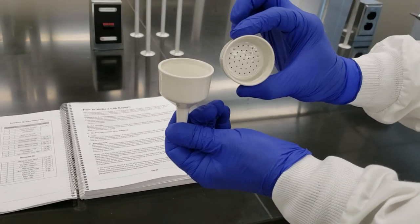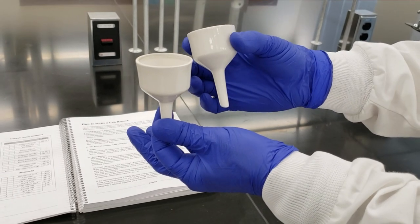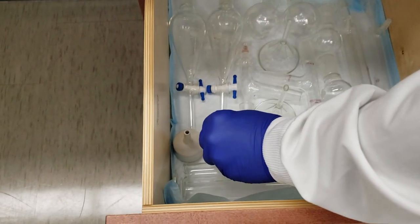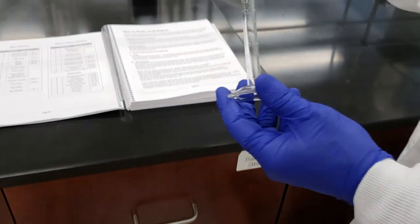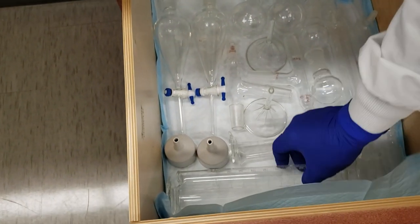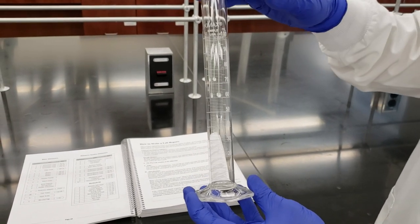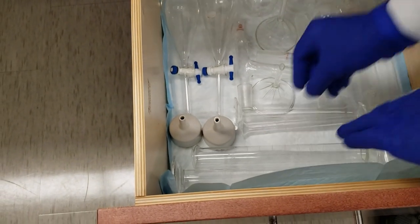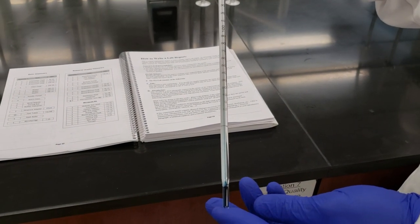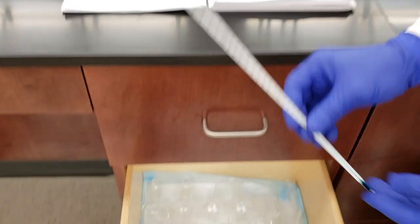We have two Buchner funnels for suction filtration to isolate purified product during experiments, used with the filter flask from drawer one. We've got two graduated cylinders, a 10 mL for more precise measurements and a 100 mL for greater volume. Last but not least, we have two alcohol thermometers for various purposes during the semester. That's it for drawer number two.